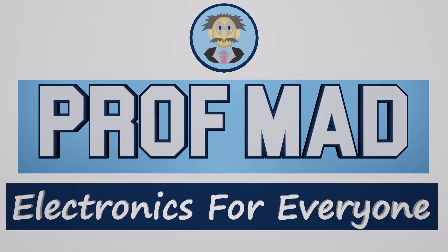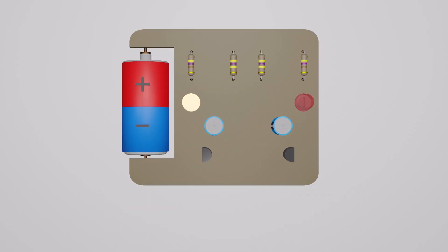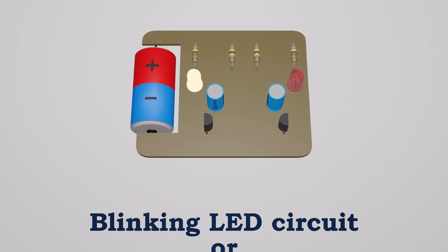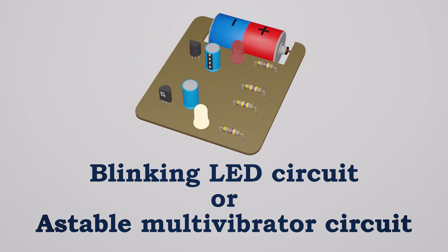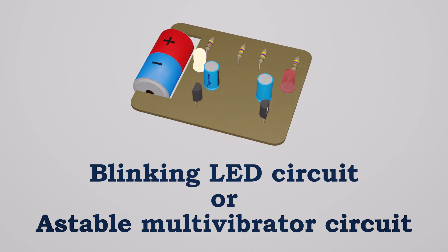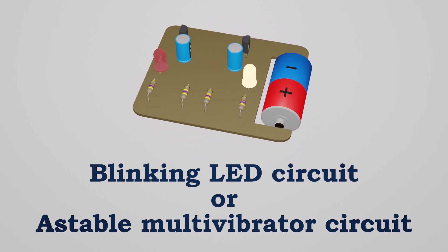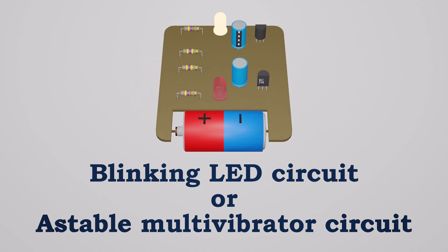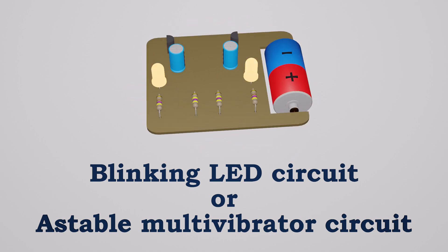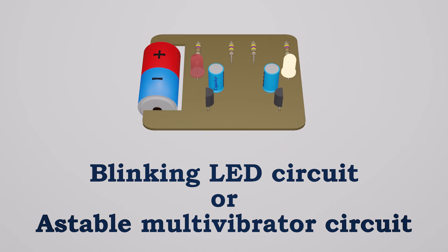Welcome to Professor Matt, Electronics for Everyone. Today we are going to learn about the blinking LED circuit, also known as an astable multivibrator. The blinking LED circuit is like the electronics version of the Hello World program — a simple electronic circuit that gives you a visual cue if it works. It was the first circuit most electronic enthusiasts ever built, and it felt great.